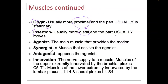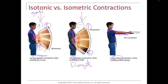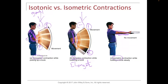What do we mean by agonist and antagonist? The agonist is the main muscle that provides the movement, and the antagonist is one that opposes it. If the biceps is the agonist for elbow flexion, the antagonist would be on the opposite side — the triceps in the back that extends the elbow. Agonists and antagonists are opposite muscles on opposite sides of the joint.